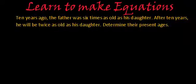Hi, so again we have one more word problem which needs to be solved. So first let's read the statement and then we will try and solve it. The statement says: 10 years ago the father was 6 times as old as his daughter. After 10 years he will be twice as old as his daughter. Determine their present ages.